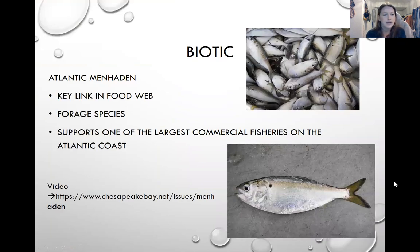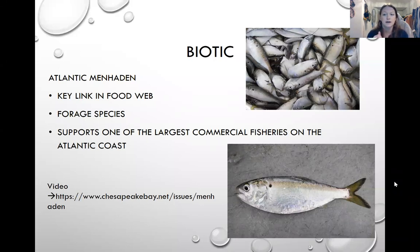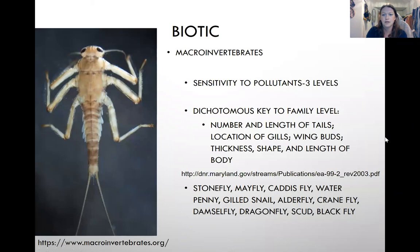The Atlantic Menhaden slide is here because it supports one of the largest commercial fisheries on the Atlantic coast. Doing some research on this fish will teach you a lot about commercial fishing and the impacts of regulation. Osprey eat a lot of menhaden and they're also used for pet food. It's a great topic for understanding concepts you might see on the test. Macroinvertebrates are another big focus for the biotic section because they have sensitive orders — an abundance of sensitive orders indicates a pretty healthy stream, making them very useful in determining stream health.